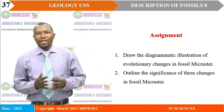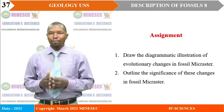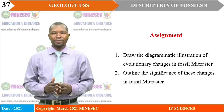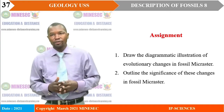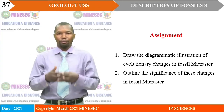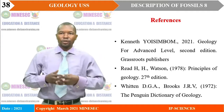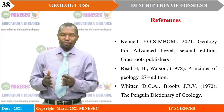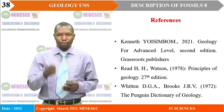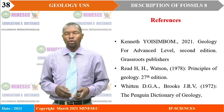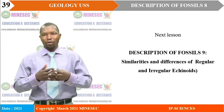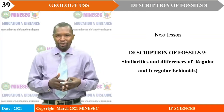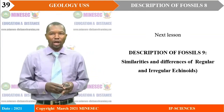As your assignment while at home, you shall draw the diagrammatic illustration of evolutionary changes in fossil Micraster. You will also outline the significance of these changes in fossil Micraster. You can visit 'Geology for Advanced Level' and 'The Fundamentals of Geology' to help you develop the diagrams. Remember, the drawing position is very important as you do your assignments and read more at home. We have come to the end of our lesson. Our next lesson will be on Description of Fossils 9, and we shall focus on similarities and differences of regular and irregular echinoids.